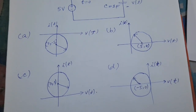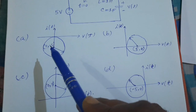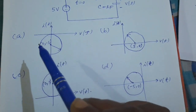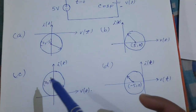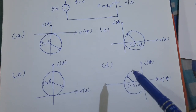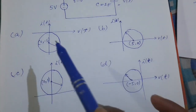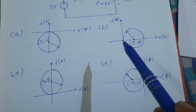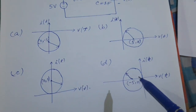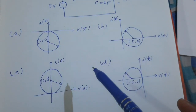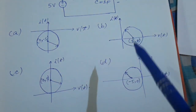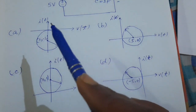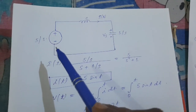Let's find the solution. Looking at the options: the first locus lies in the 3rd and 4th quadrants; the second lies in the 1st and 4th; the third lies in the 1st and 2nd; and the fourth lies in the 2nd and 3rd quadrants. All four loci touch the origin, and their radius is 5. We need to determine where the center lies — this is the I(t) versus V(t) curve.